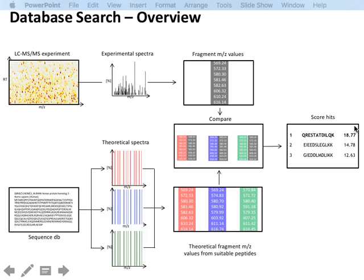The search engine sorts results by score and typically reports something for each spectrum — that's the dangerous part: you will always find something. If the spectrum was good and the database contained the correct entry, then the top-ranking hit is most likely the peptide you're looking for. The question is whether a score of, say, 18.77 is a good hit — the answer depends on your search engine and scoring function.